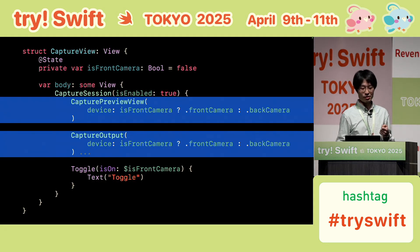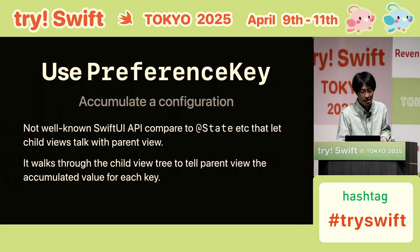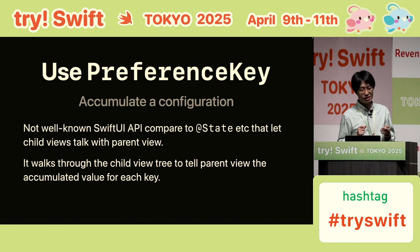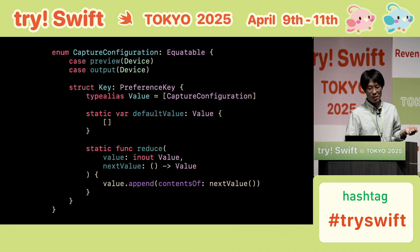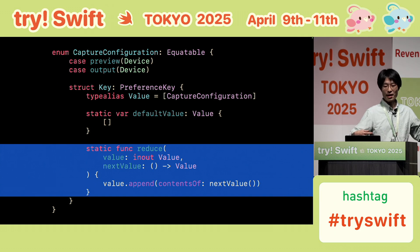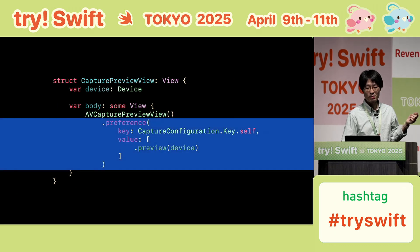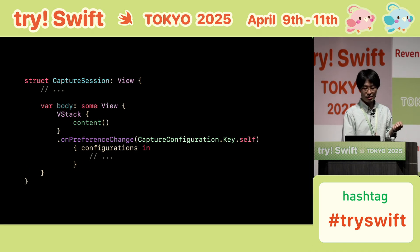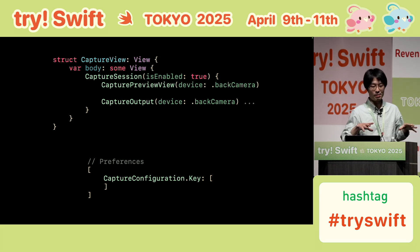We need to gather information from child views up to the parent — the capture session — to see how the child looks. SwiftUI has a well-known solution for this: the preference key. It lets child views send values up the view tree to the parent. Here's an example: this is a simple preference key. We assign a value in each child view, and the reduce function collects these values into a single array. Each view uses the dot-preference modifier to send its value, and then the parent view — in our case the capture session — uses onPreferenceChange to receive them.